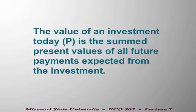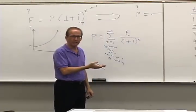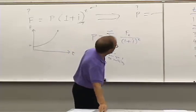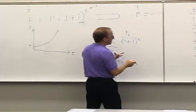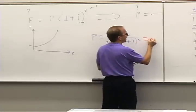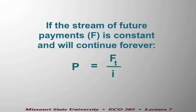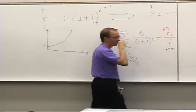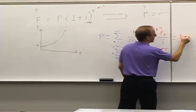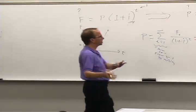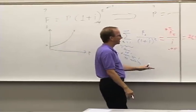If it goes to infinity, it's actually easier. It seems like it would be harder — oh my God, I'm just going to be adding these numbers up forever. But it actually gets easier because at that point this becomes what is known as an infinite series, and it simplifies to just: the annual dividend divided by the interest rate. So in this case, it's 3 divided by 0.05. The present value of all those future dividends forever would be $60.